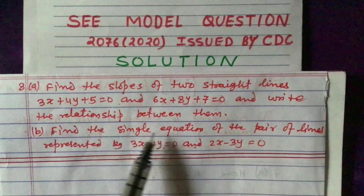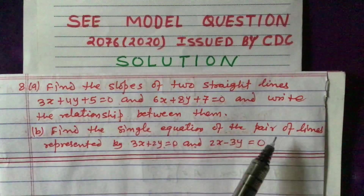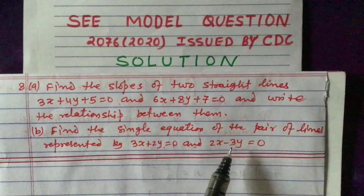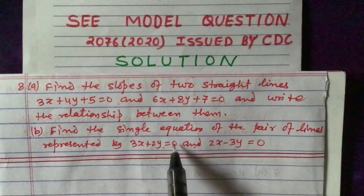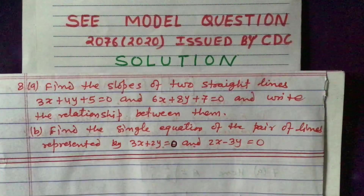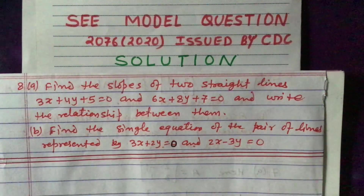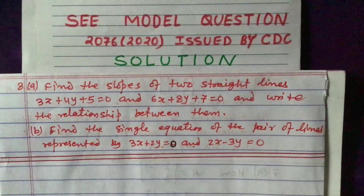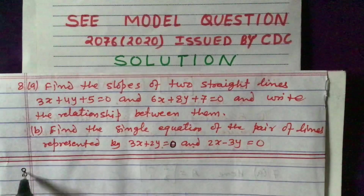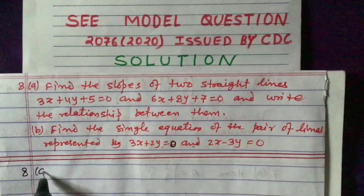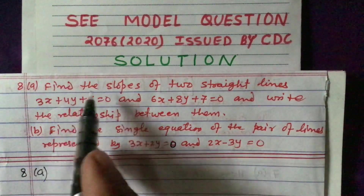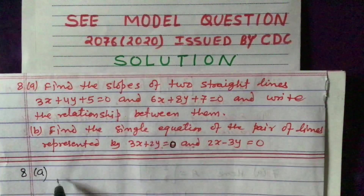The next question is: find the single equation of the pair of lines represented by these two equations. Now our solution begins. First of all, we will solve question number 8A. Here we have been given the following.